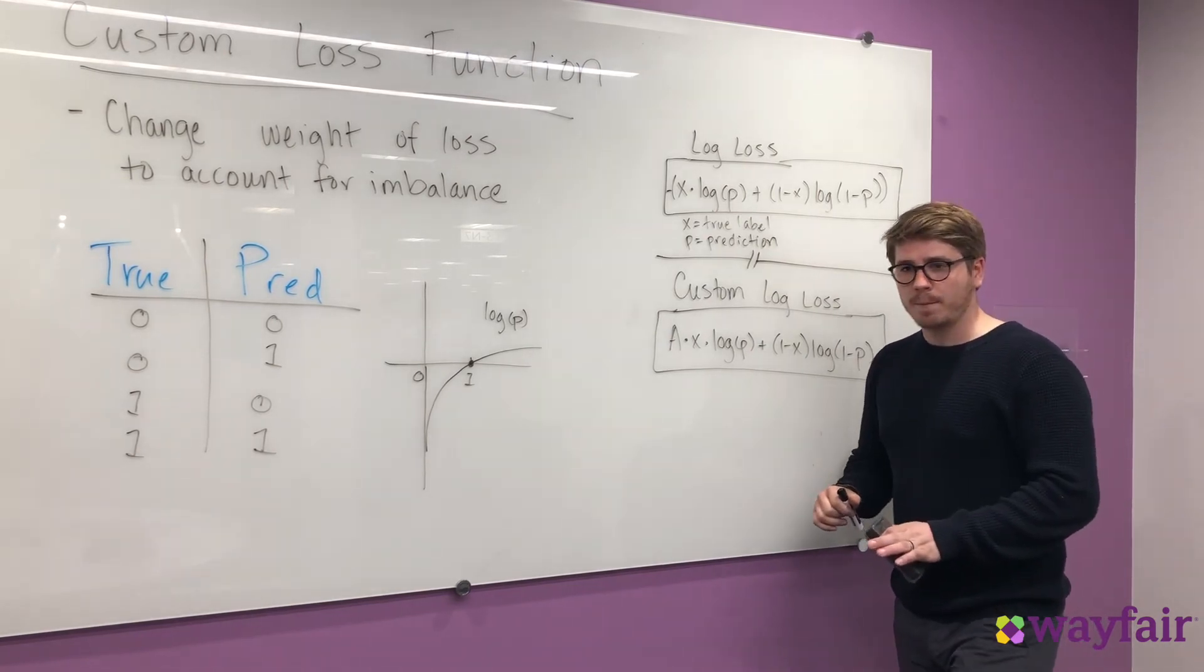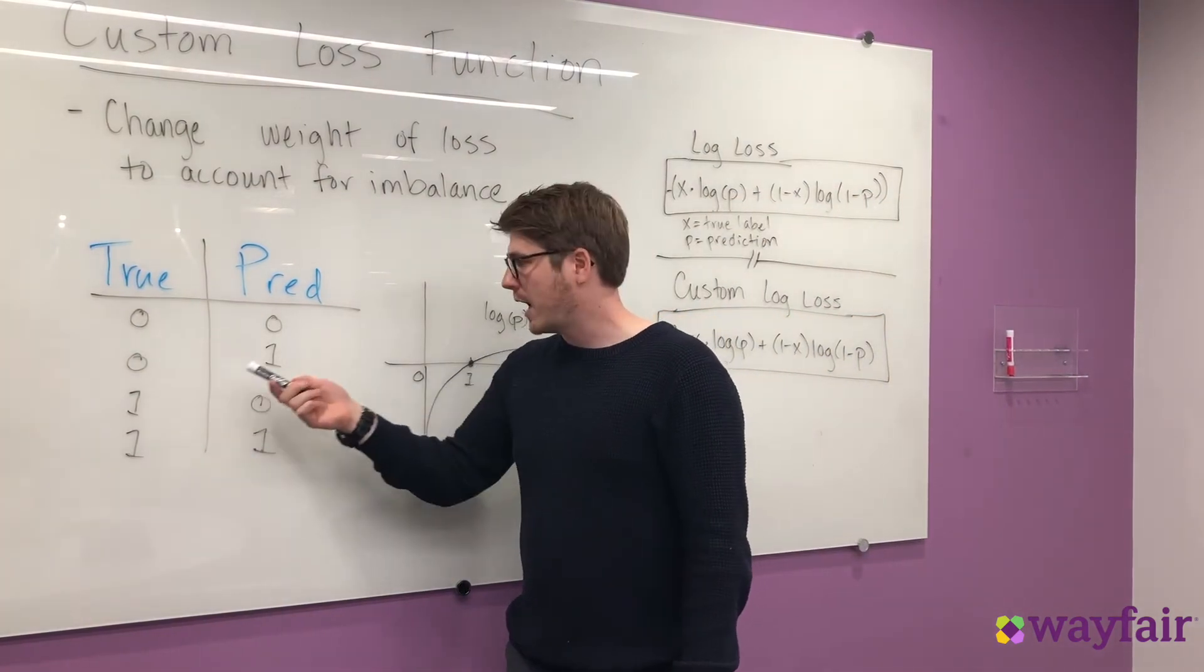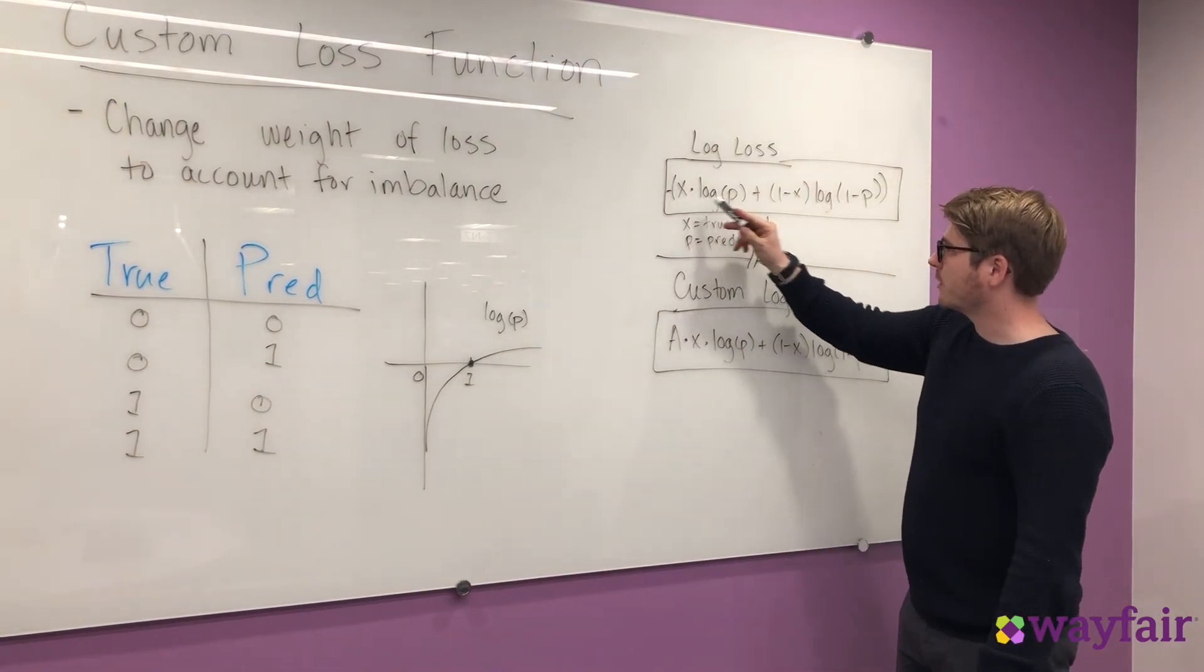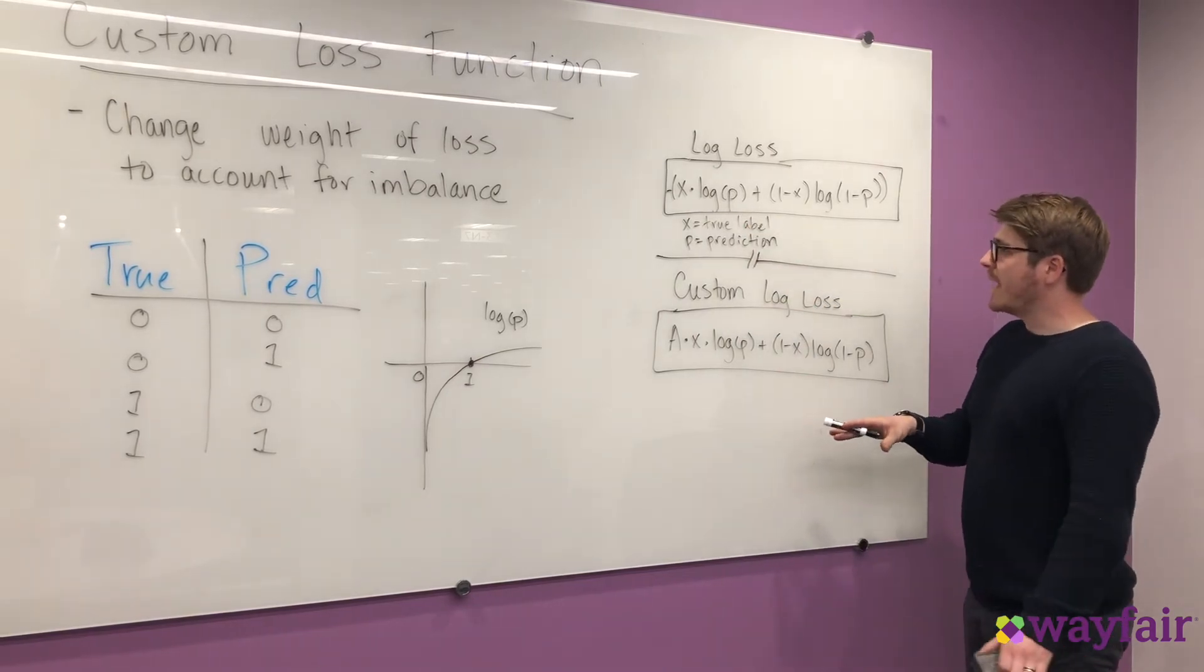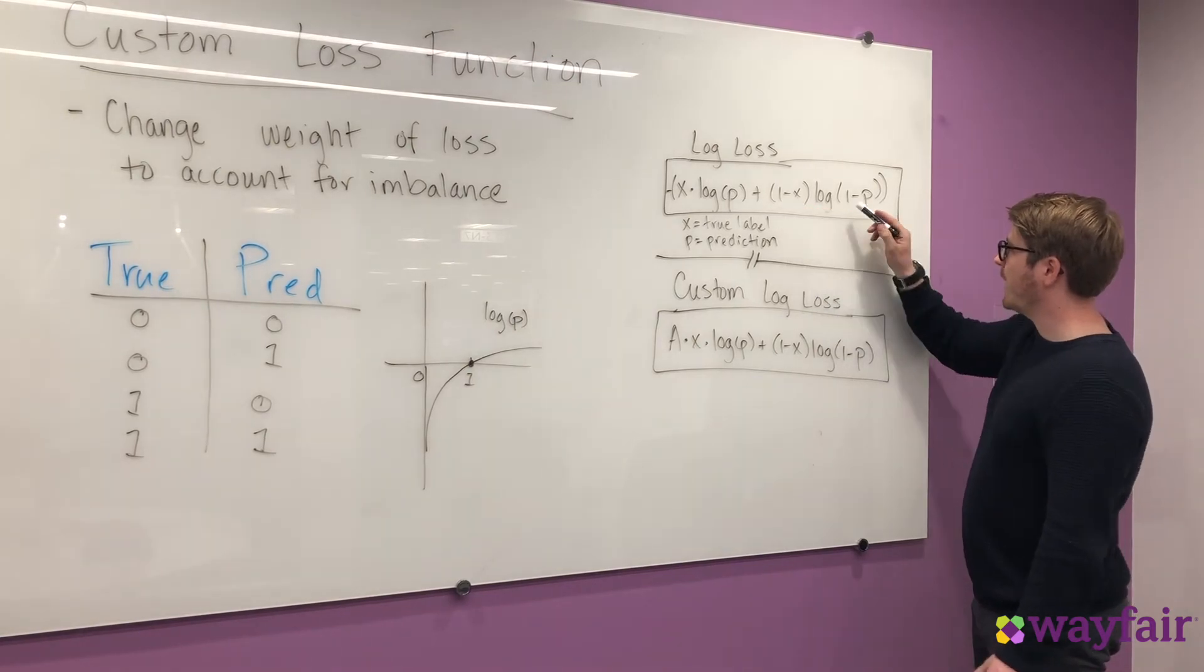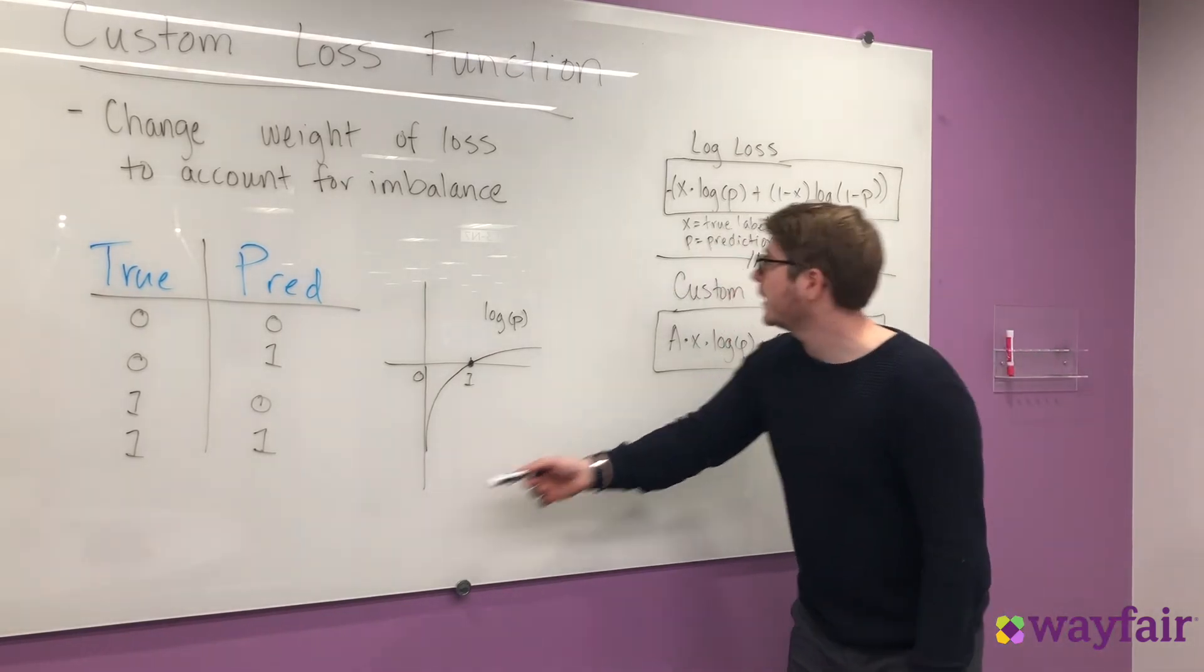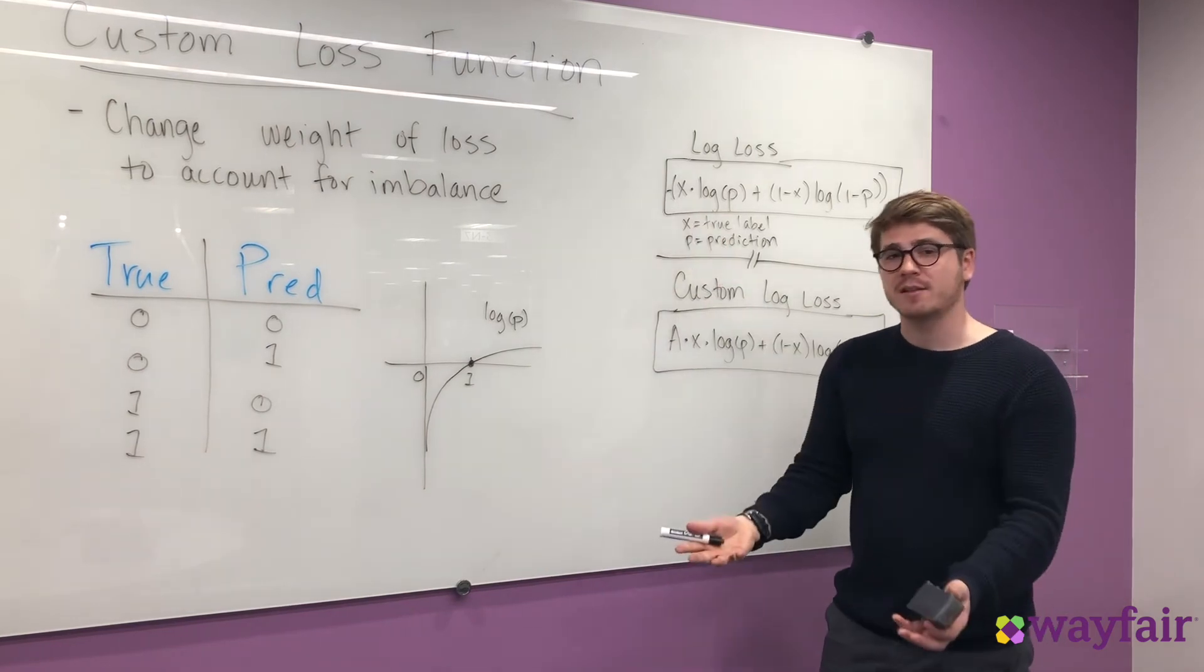On the other hand, let's assume that the true value is 0, and we accidentally predict 1. We've just messed up. Well, the true value is 0, which means that this term in log loss will still be 0. That dropped out. But then we have this term where we're weighting it by 1, and we have the log of 1 minus 1. Now we're looking at something that's approaching negative infinity. But don't forget the negative sign outside here, so we have a massive loss.